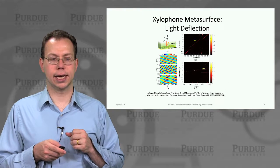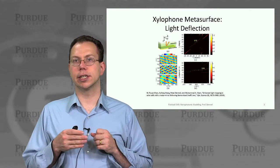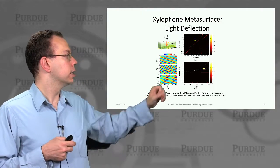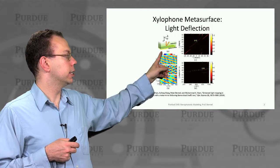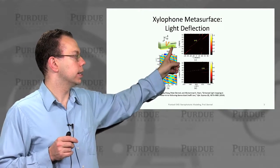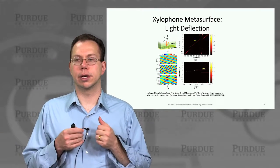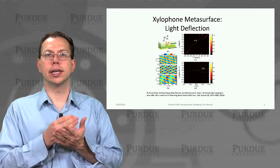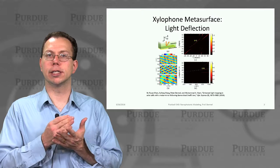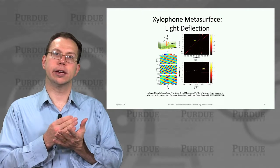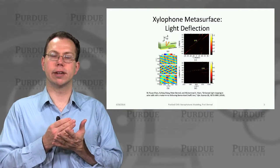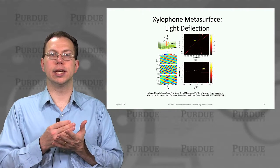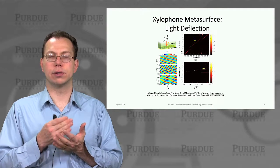As the next step, we'll look at a different structure which is conceptually very similar but would physically be implemented a different way. Basically, you can see there are a bunch of metallic ribs, each with a different width. I like to call this the xylophone structure because it's essentially just a single material, but each of the bars is a different size. You can think of each bar in a xylophone as having a different resonant frequency, and much like that kind of system, each of these bars has its own optical resonant frequency.